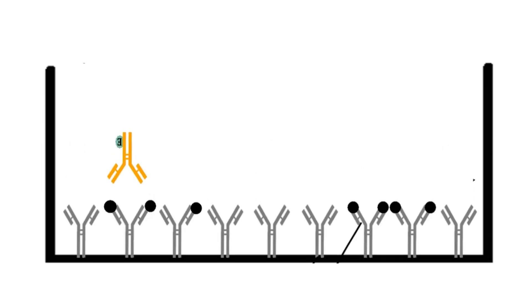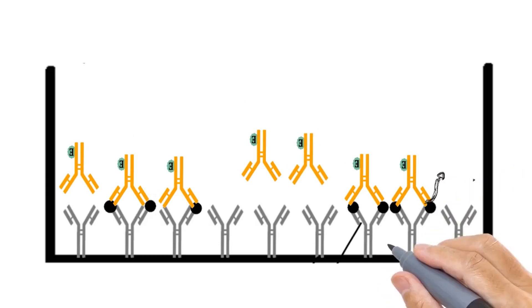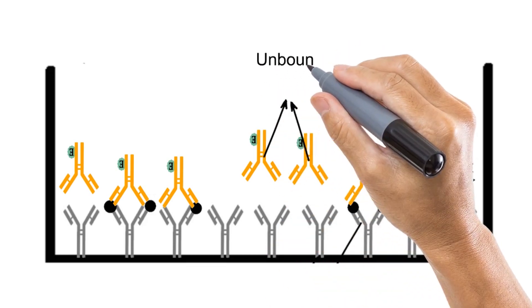After this, secondary enzyme-linked antibodies against interleukin 2 are added to the well. These antibodies will bind to interleukin 2 molecule like this and many antibodies will remain unbound.